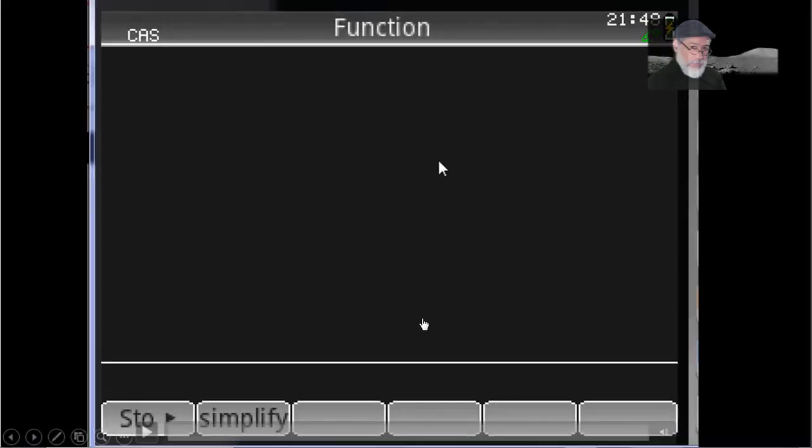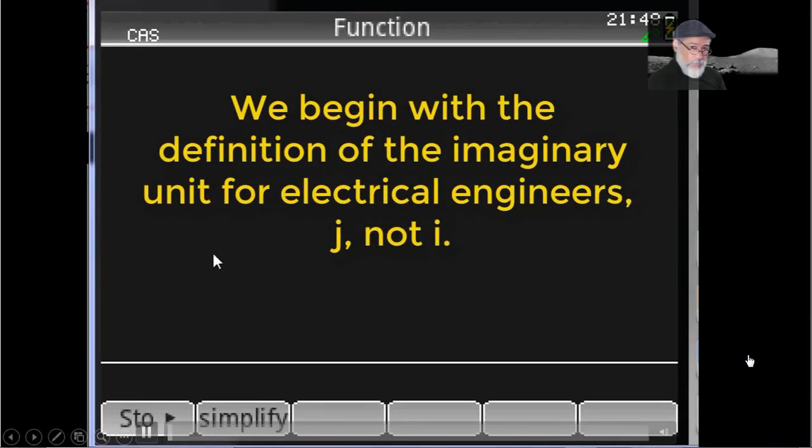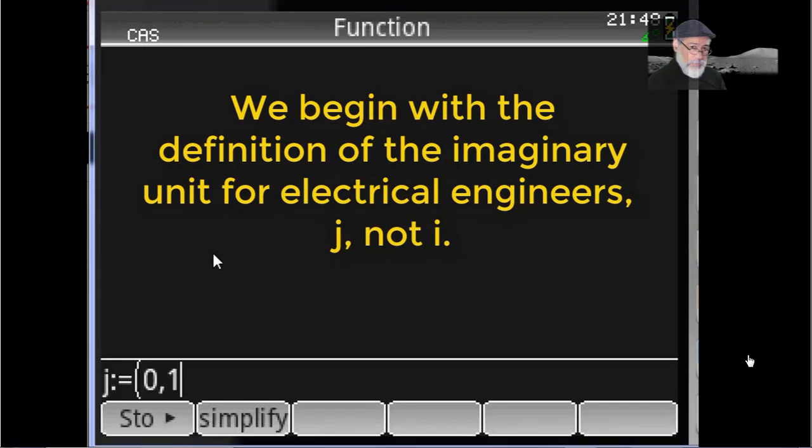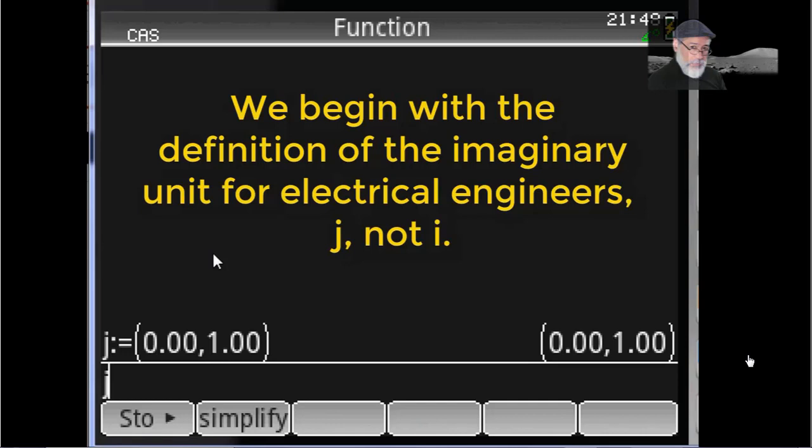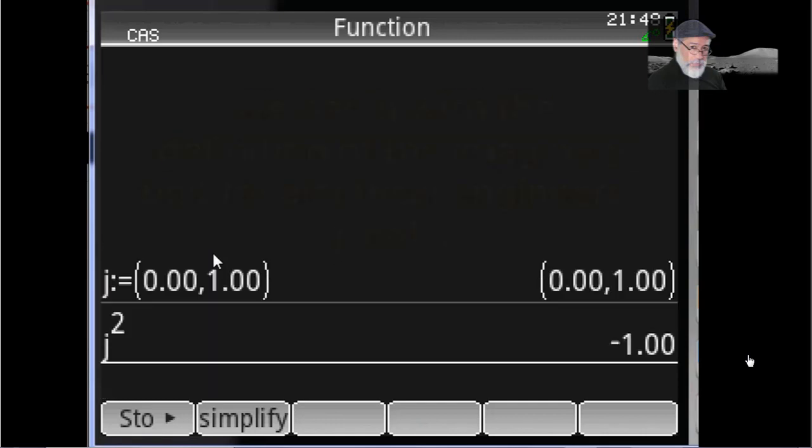We're ready. Let's work on the calculator. The first thing I'm going to do is define who is J. J is 0,1 in rectangular mode. Square that to check. Square of J is negative 1. Absolutely.